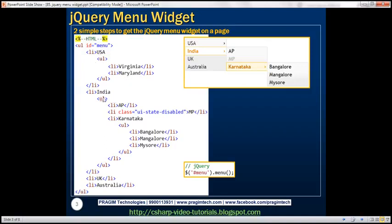Similarly, list item India has three children: AP, MP, and Karnataka — the states within India. The Karnataka state has three list items as its children, the cities within Karnataka state. List items UK and Australia don't have any children.